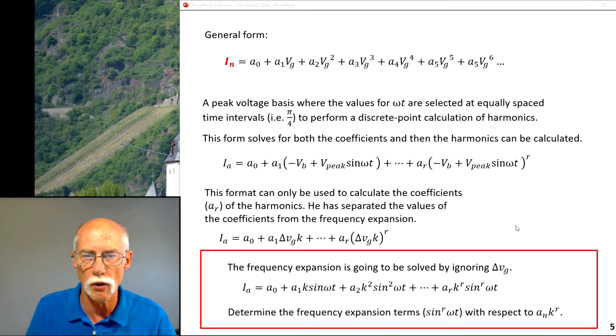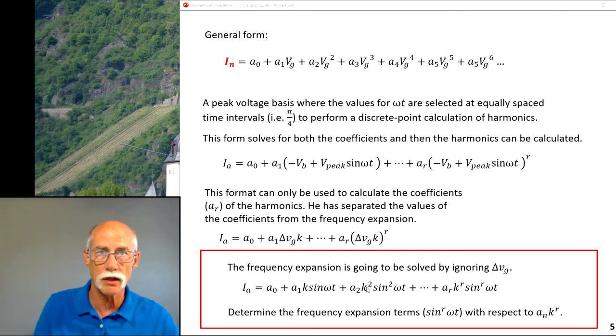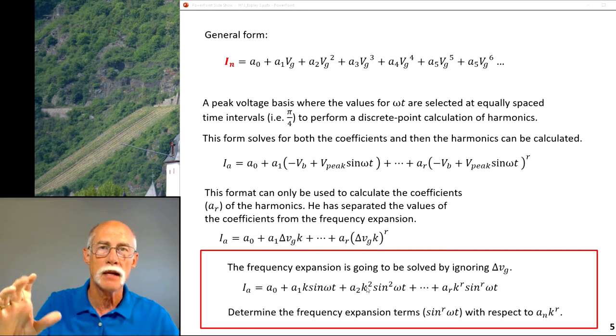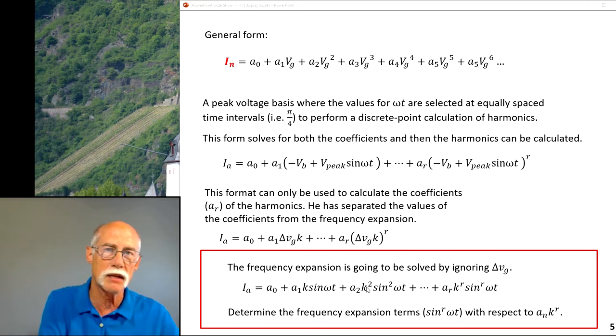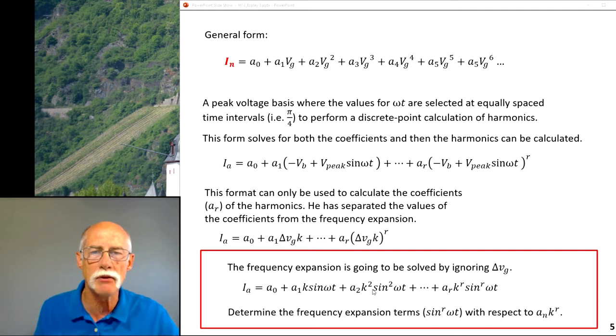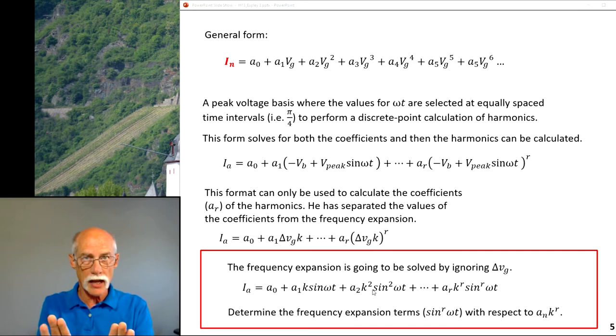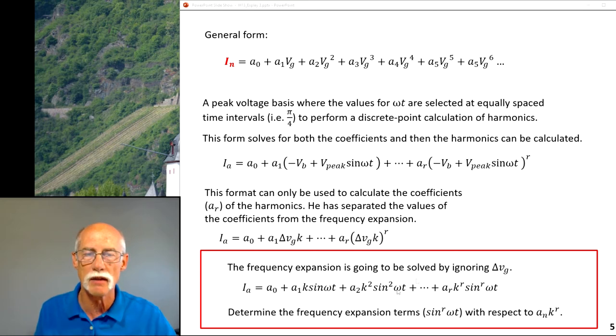But what we want to know is something about the term K, which he introduced as Vg over delta Vg. The peak voltage, if you have three volt peak to peak, the peak voltage would be one and a half volts divided by, if you have four segments, it'd be three quarters of a volt or K is going to equal two. But how does K change with the frequency terms? So that's all we're going to look at here, is K with respect to the expansion terms of sine omega t.